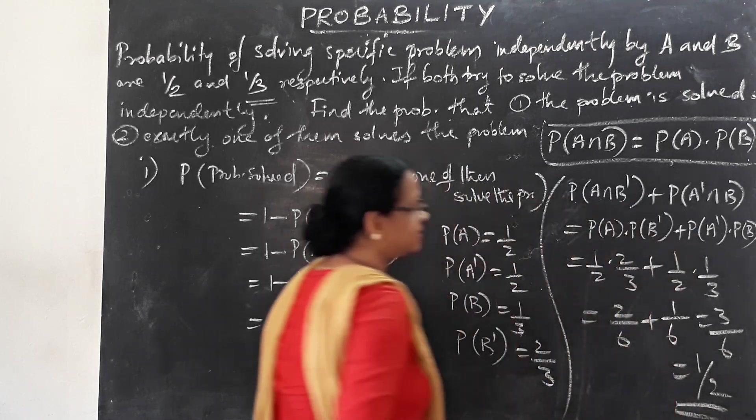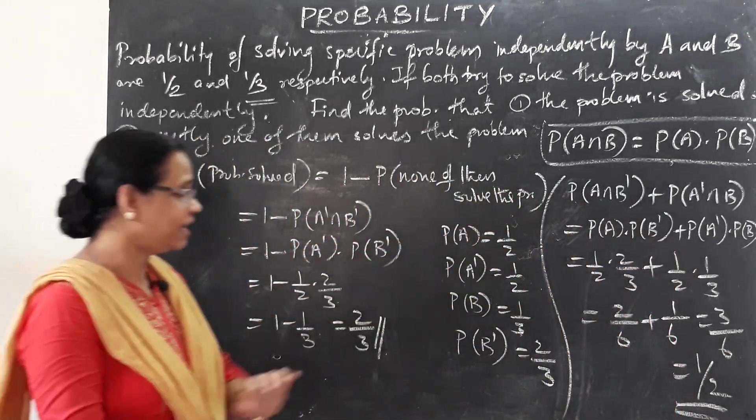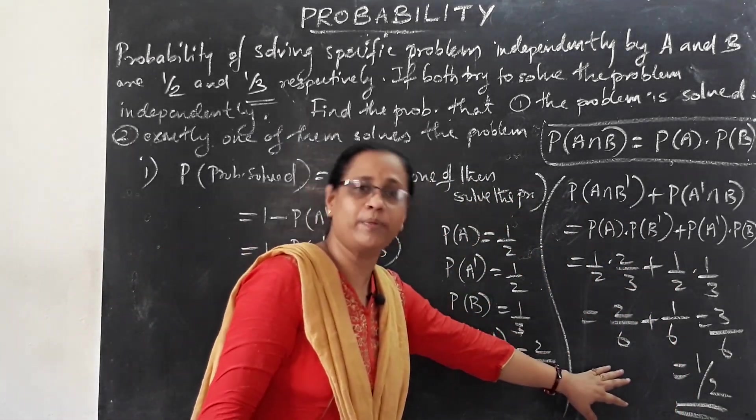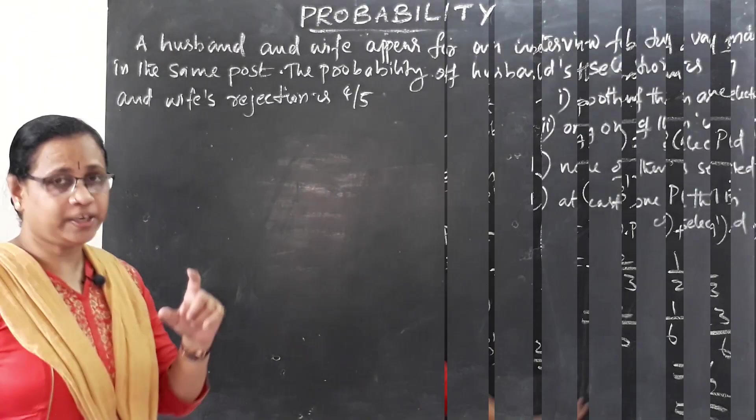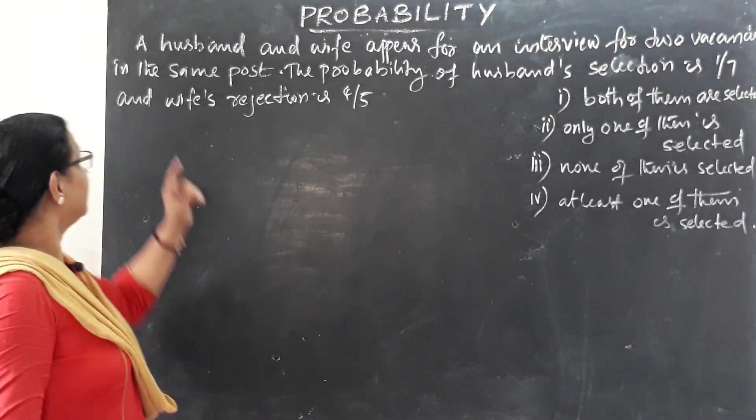That is 1/2. So the probability that exactly one of them solves the problem is 1/2. Now let's move to the next question on independent events.